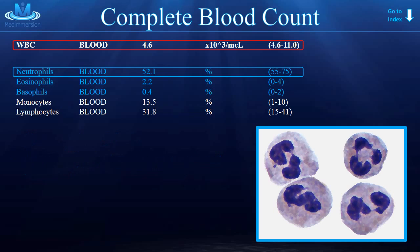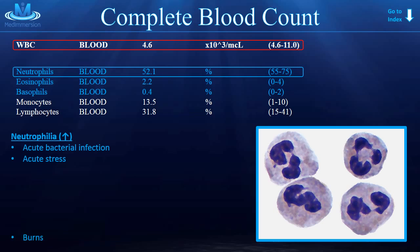So given that information, what do you think you might use the neutrophil part of this CBC to diagnose? Bacterial infections — bacterial infections would cause the neutrophil count to go up, and this is called neutrophilia. What are some other things that could cause neutrophilia? How about acute stress, burns, leukemia, steroid use, and rheumatoid arthritis?